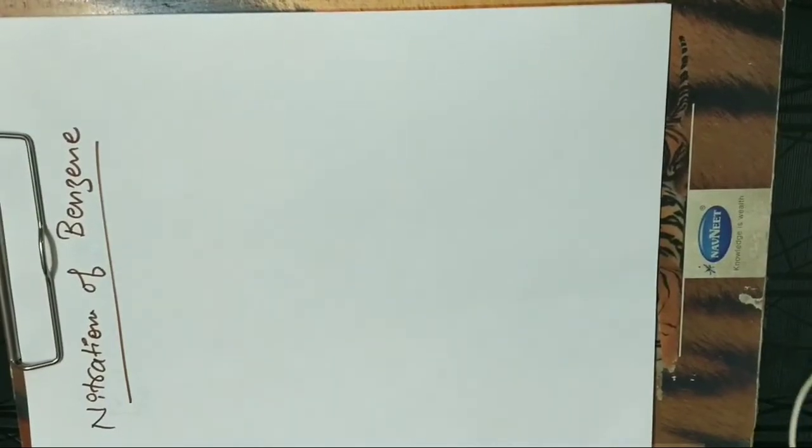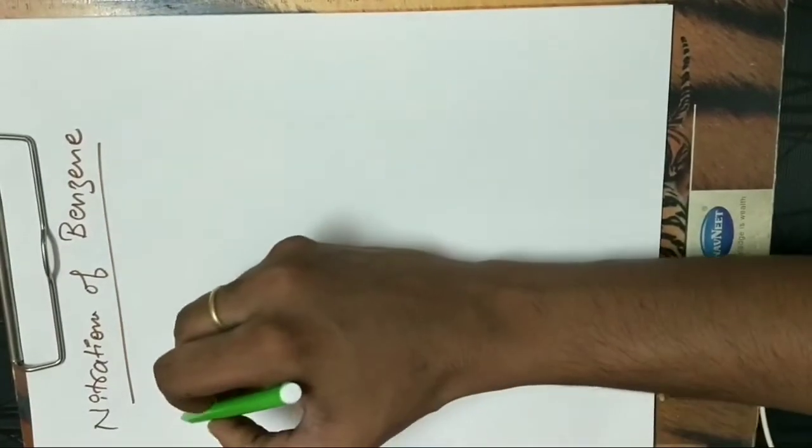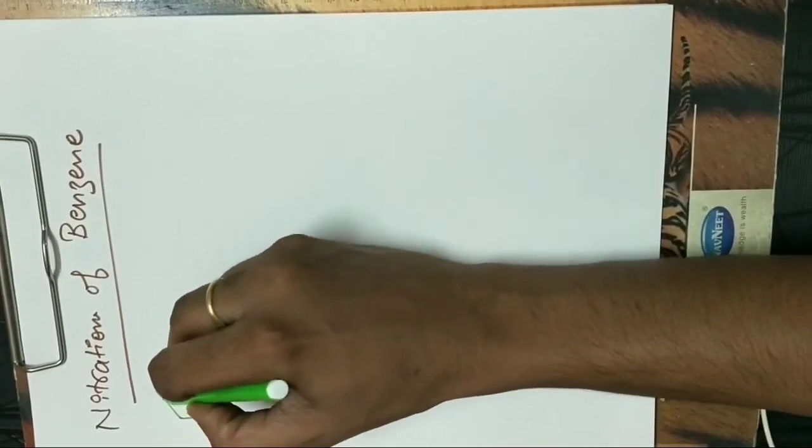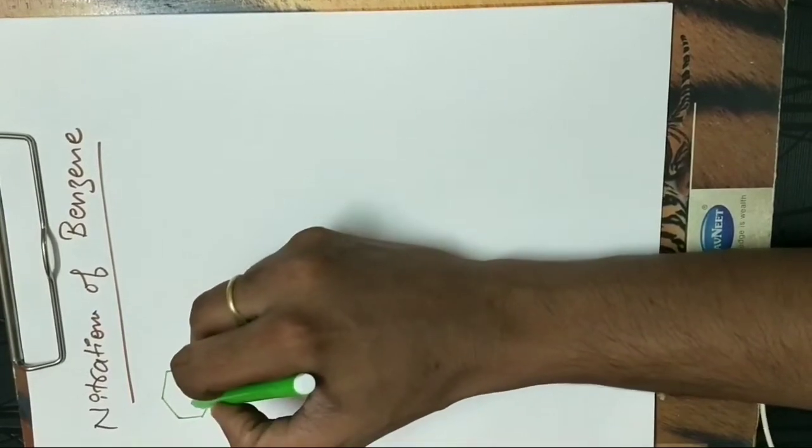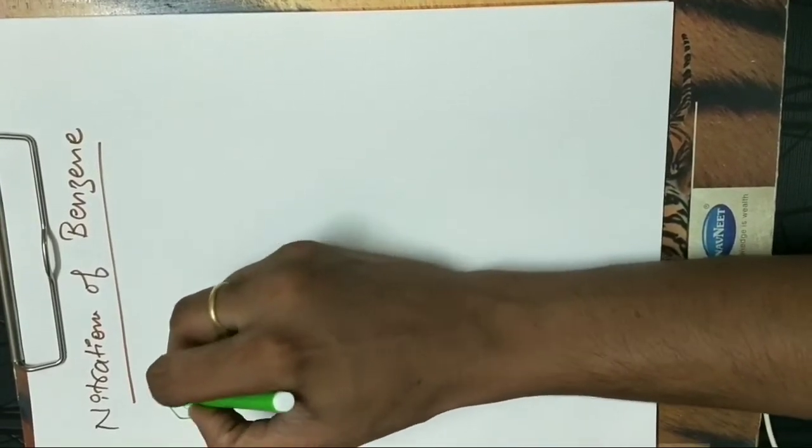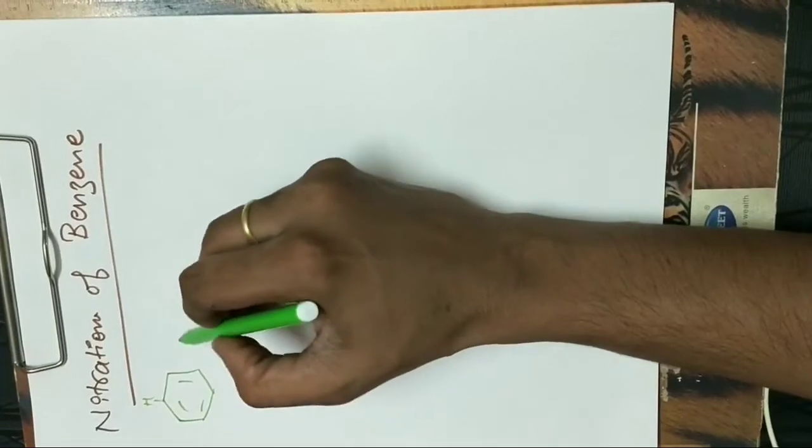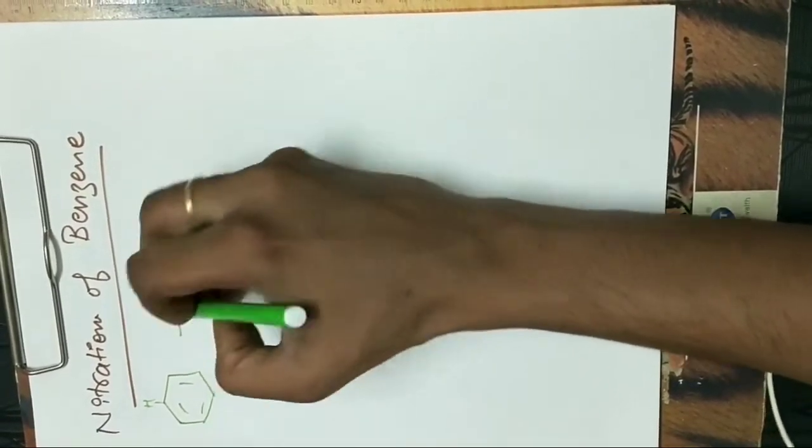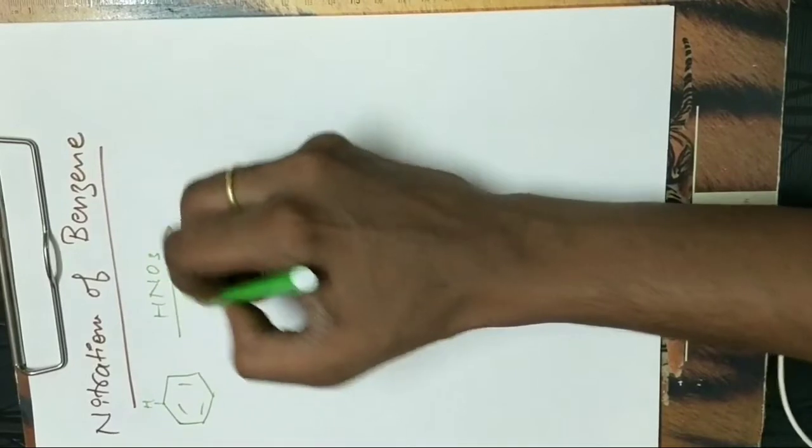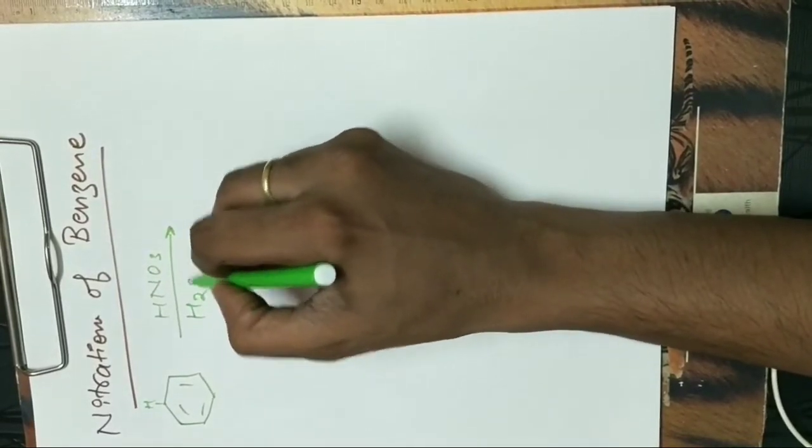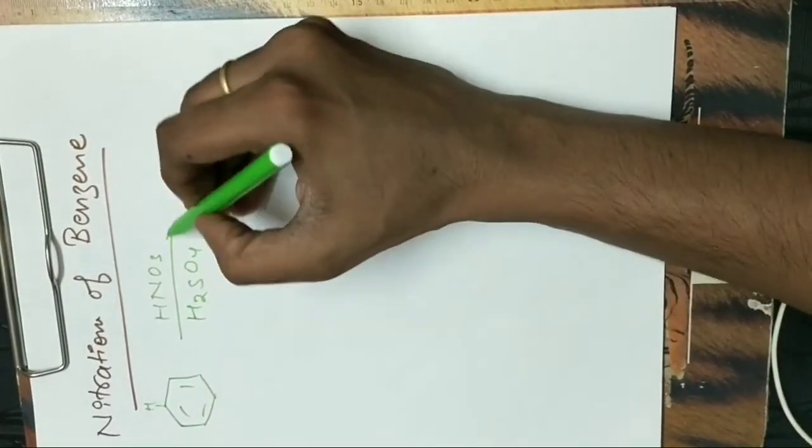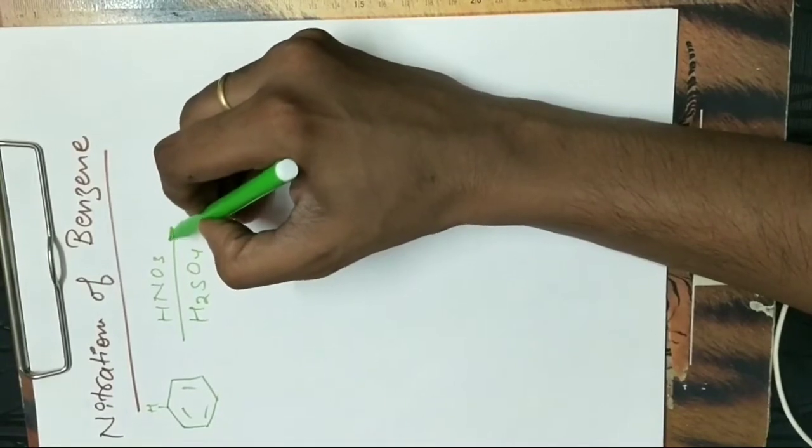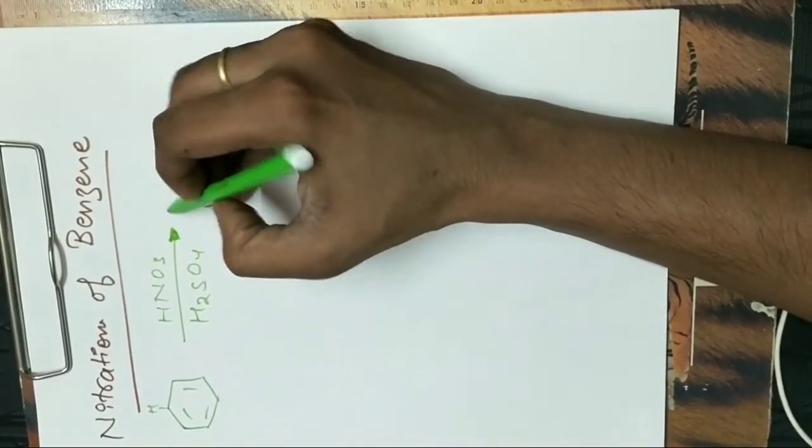The reaction: when benzene reacts with HNO3 and H2SO4, it will generate an electrophile, the nitronium ion, which will result in the formation of the product.